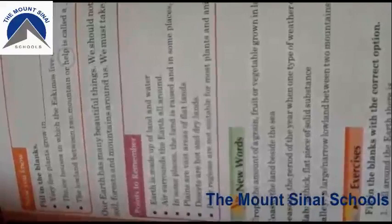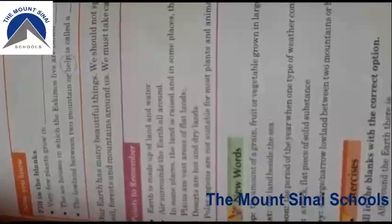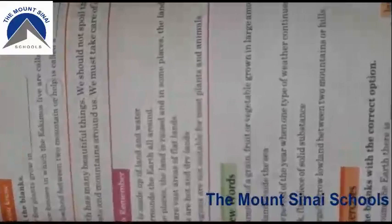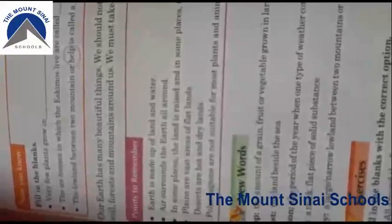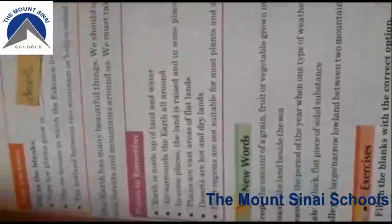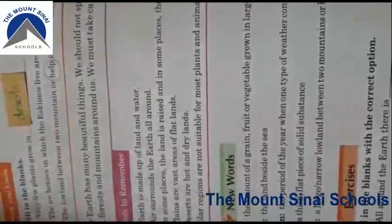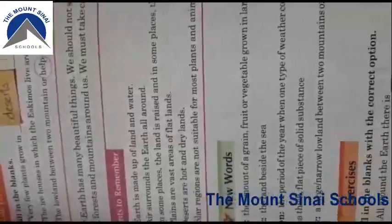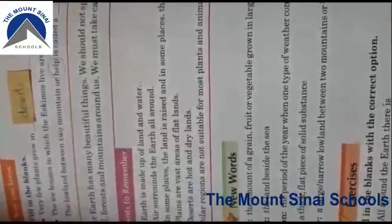On page number six there are more fill-in-the-blank questions. If your reading comprehension is good, you can easily fill them in. The answers are: plants that grow in the desert — cactus; the ice houses in which the Eskimos live are called igloos, as shown in the picture; and the lowland between two mountains or hills is called a valley.